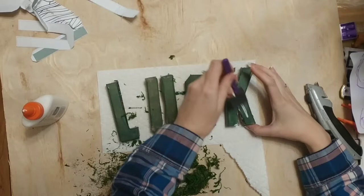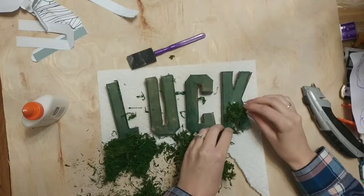So I just took some glue and put it right on the letters and then used my brush to kind of spread it out. And then just smooshed that floral moss right on top of all of my letters.